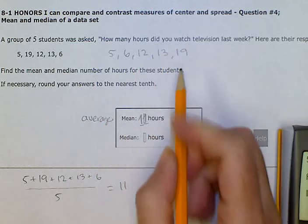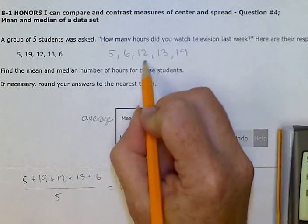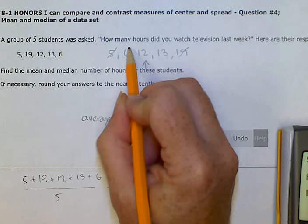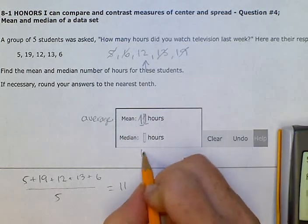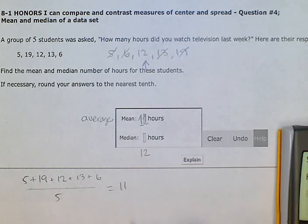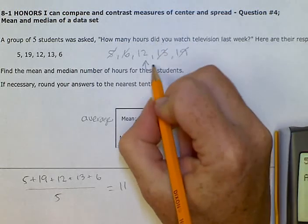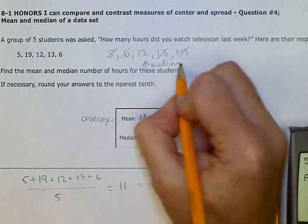And now we're looking for the middle number. So we can mark off the ends and then the next two in, and then we end up with 12. That's our middle number, 12 hours for the median. This one was the mean, and this number is the median. Thank you.